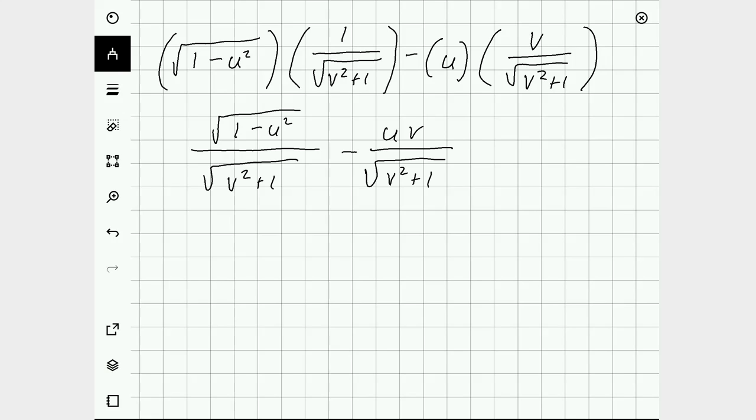And then I can recognize that I have a common denominator, so I can subtract across the numerator. And we'll have the square root of 1 minus u squared minus uv all over the square root of v squared plus 1.